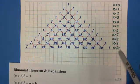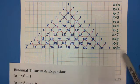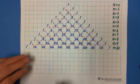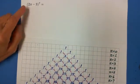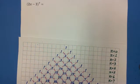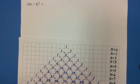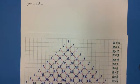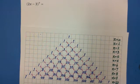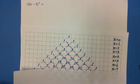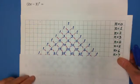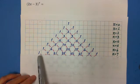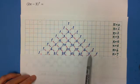Now I will show you one example: how to expand (2x minus 3) to the 7th exponent. So it means n equals 7, which means we have 8 terms total. The coefficient from Pascal's triangle when n equals 7 is: 1, 7, 21, 35, 35, 21, 7, 1.